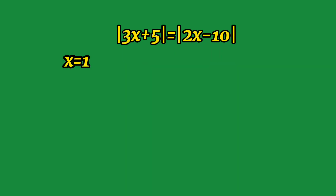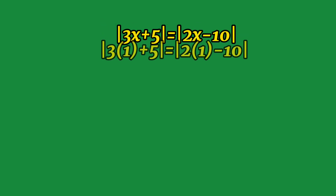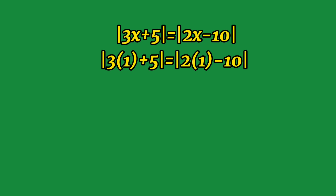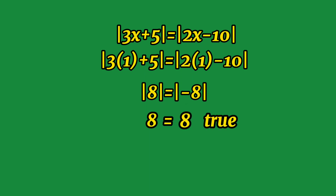Now let's check x = 1. Substituting 1 into the equation: the absolute value of 3(1) + 5 equals the absolute value of 2(1) - 10. Simplifying, the absolute value of 8 equals the absolute value of -8. The absolute value of 8 is 8, and the absolute value of -8 is 8. This is a true statement, so x = 1 also holds true.